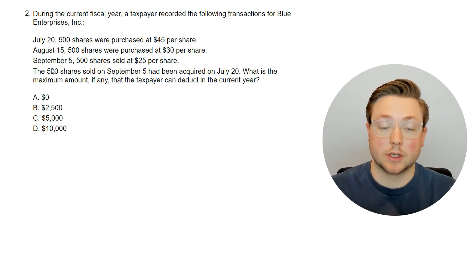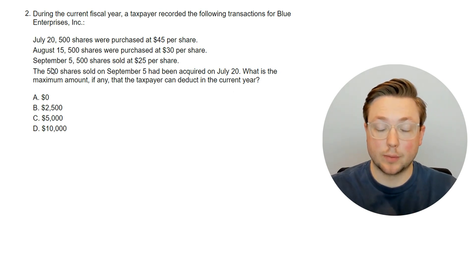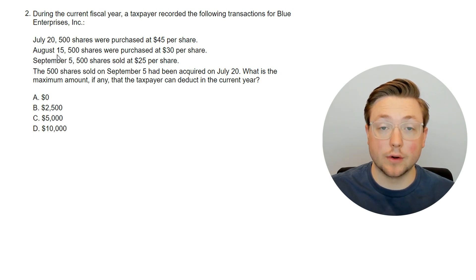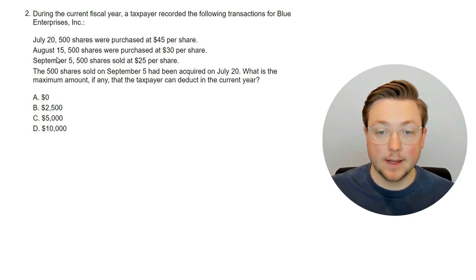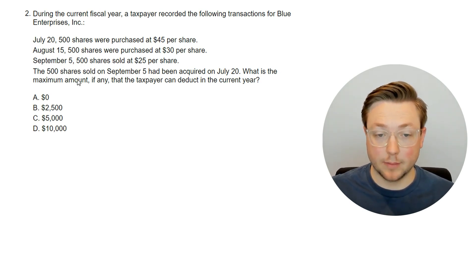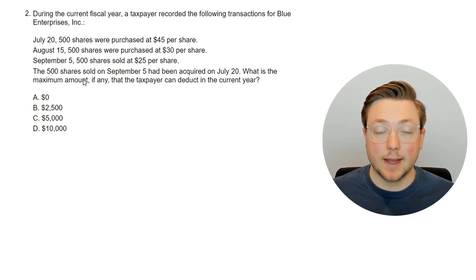We already learned that wash sales apply to purchasing similar stock 30 days before or after. The August 15th purchase is within 30 days of the September 5th sale, so there is definitely going to be a wash sale. Maybe all of it will be disallowed. Pause the video to think it through, then come back and we'll look at the answer.